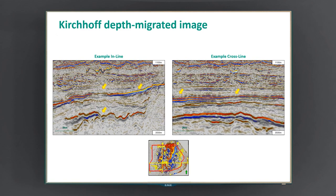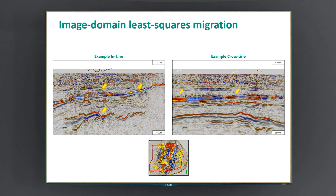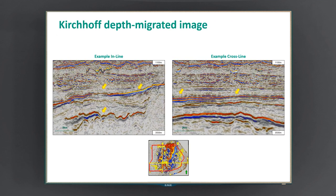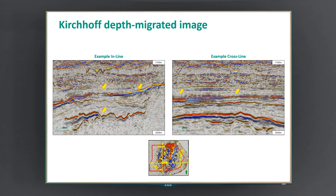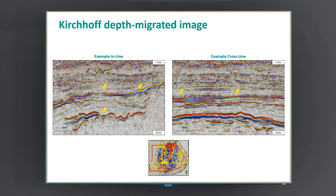If we now look at what is happening on the seismic section, here we see an inline and a crossline of the Kirchhoff depth-migrated image. If we compare this with the least-squares migration image, you can see a number of things happening. First of all, underneath the injectites, the amplitude is very well recovered and you can see that the effect of the distortion has been pretty much removed. You also see an increase in resolution, which is caused by the deconvolution of the seismic image with the point-spread function, and finally you see improved continuity of the events.